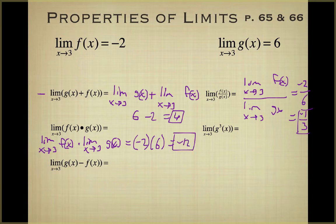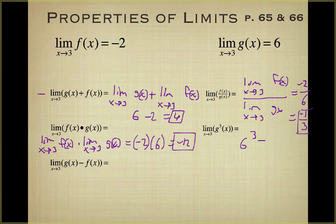The next one is the limit as x approaches 3 of g(x) cubed. This is another one of those properties. When you apply the power property, this is just the limit of g(x) cubed, which is 6 cubed, giving us 216.